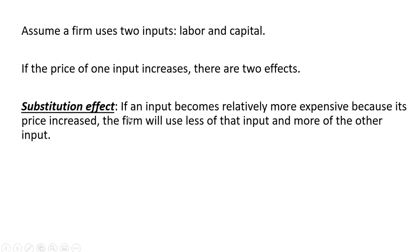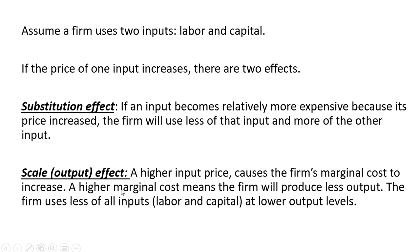The substitution effect: if an input becomes relatively more expensive because its price increased, the firm will use less of that input and more of the other input. The scale or output effect: a higher input price causes a firm's marginal cost to increase. A higher marginal cost means the firm will produce less output, and the firm will use less of all inputs — labor and capital — at lower output levels.